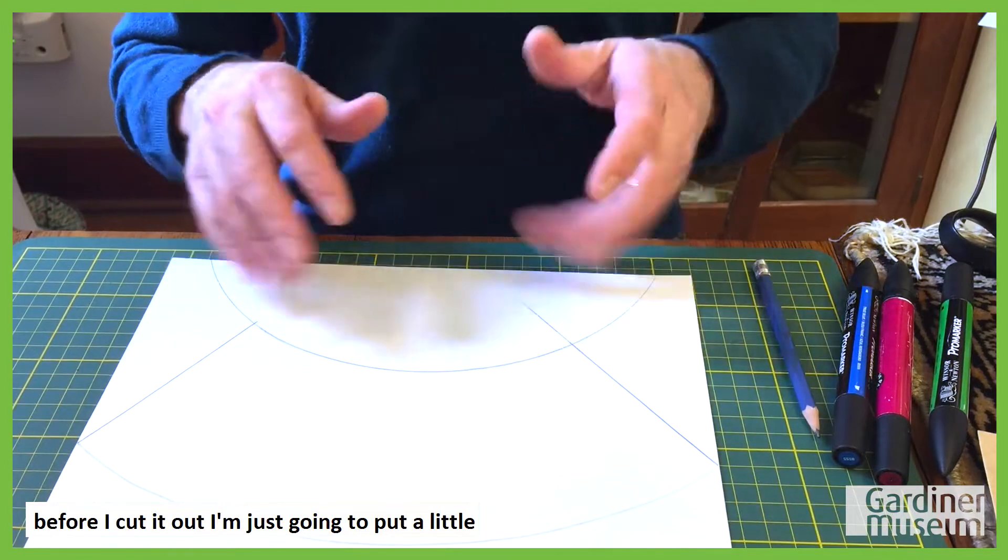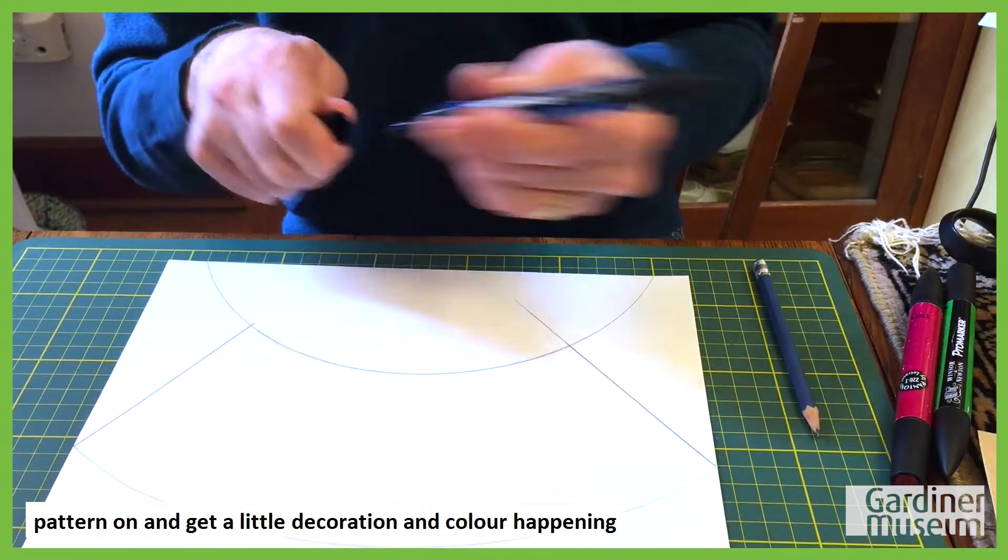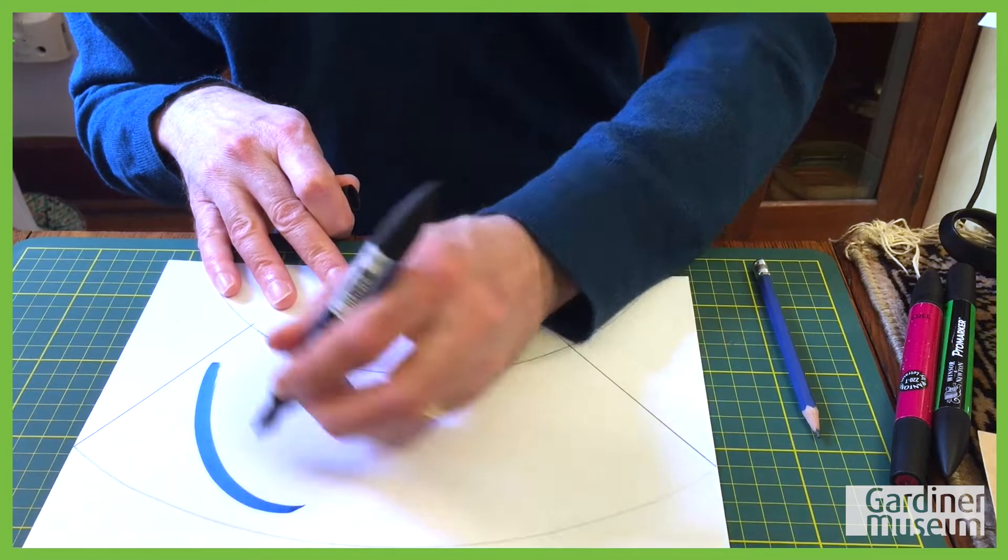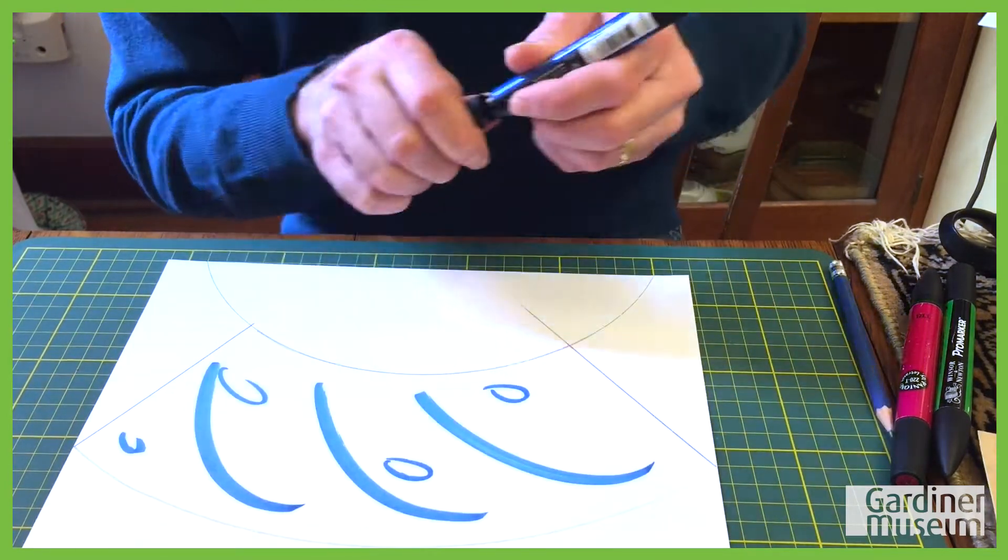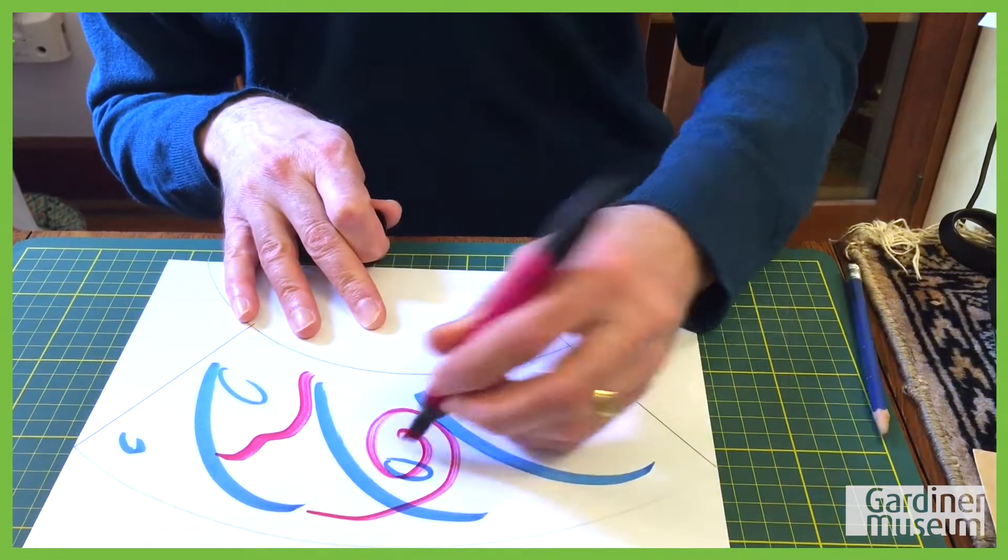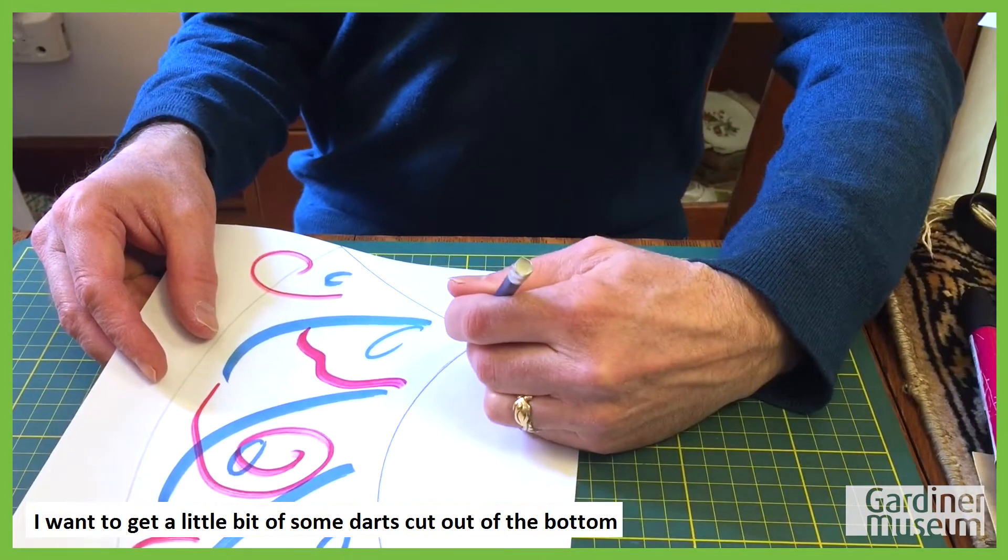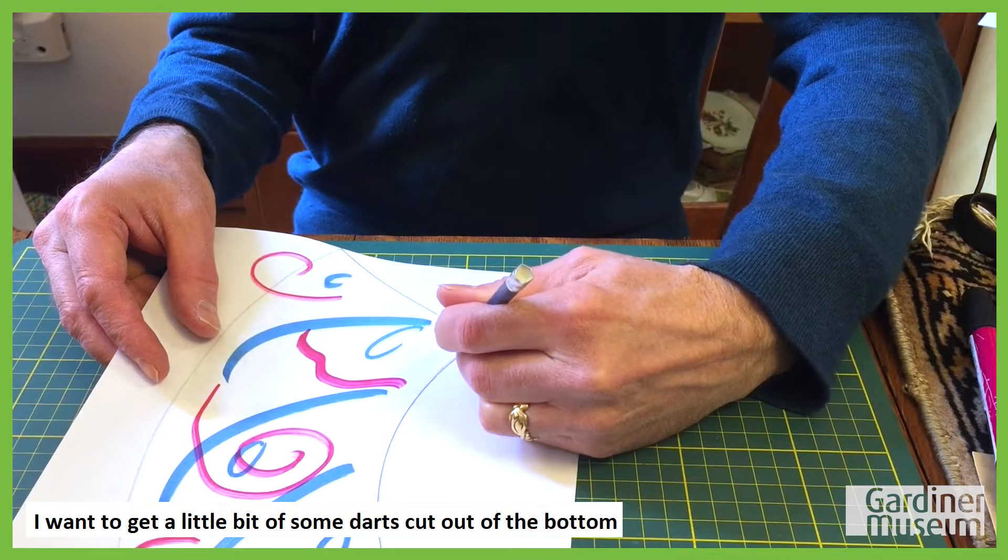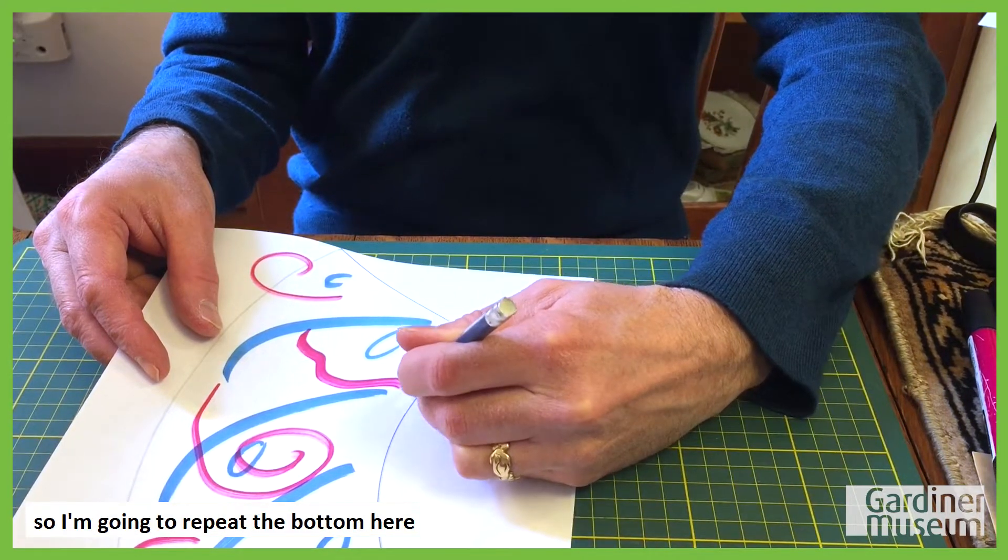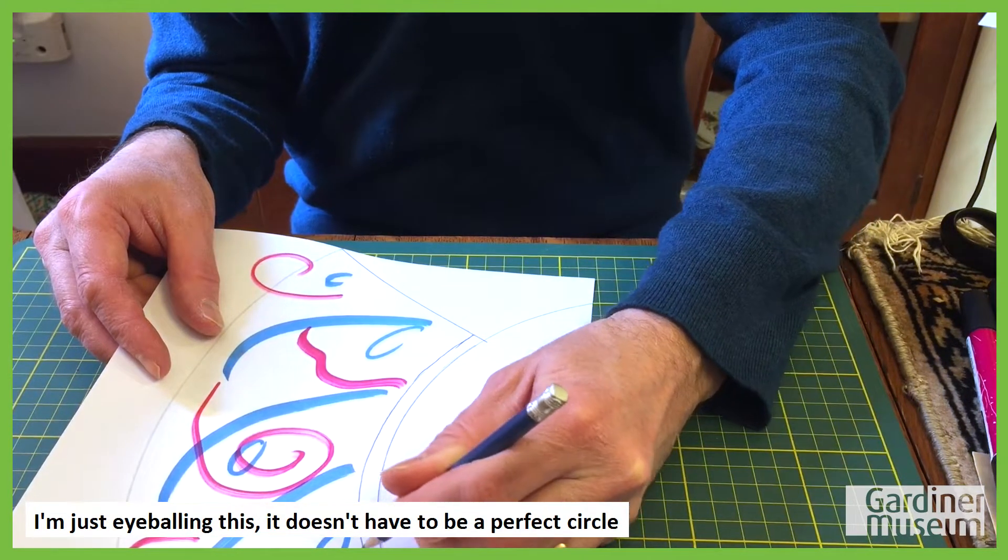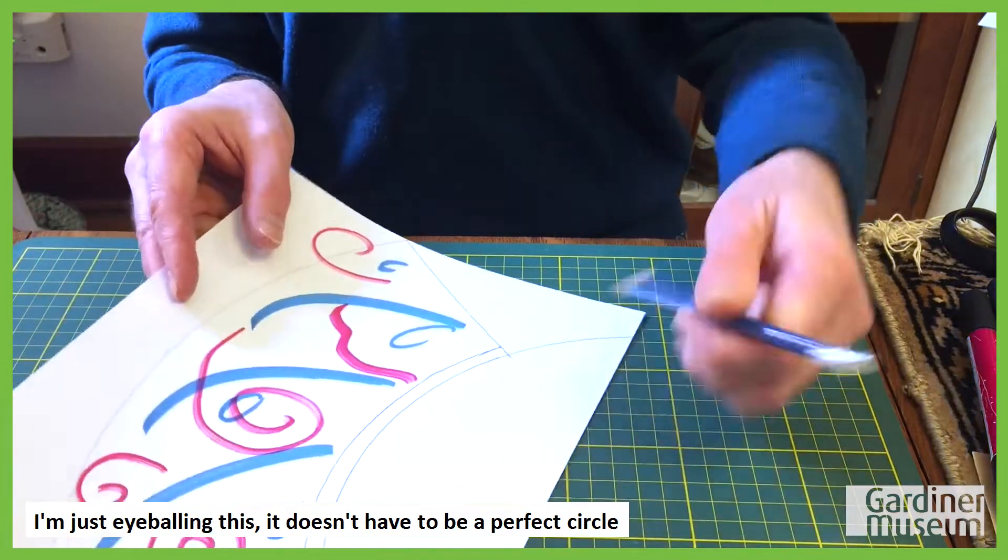Before I cut it out, I'm just going to put a little pattern on and get a little decoration color happening. Just before I cut it also, I want to get a little bit of some darts cut out of the bottom. So I'm going to repeat the bottom here. I'm just eyeballing this. It doesn't have to be a perfect circle there.